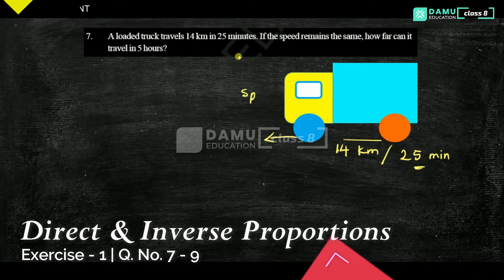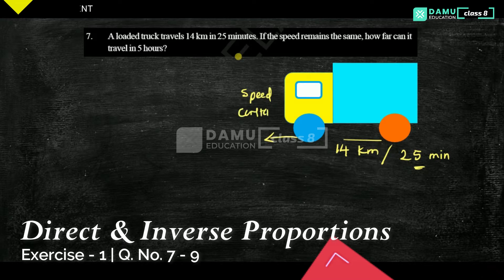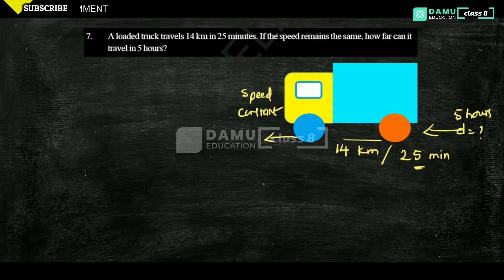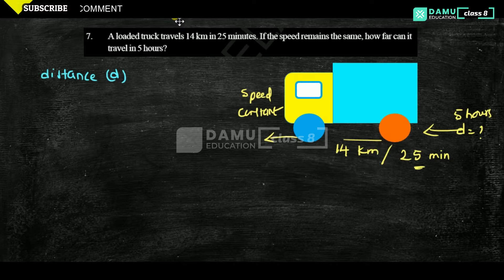If the speed remains constant, how far can the truck travel in five hours? That is what is asked. Let's take distance as d and time as t.